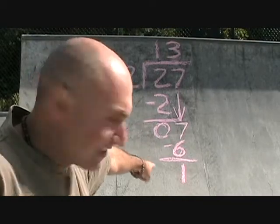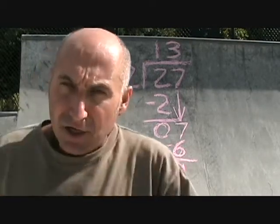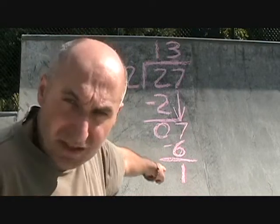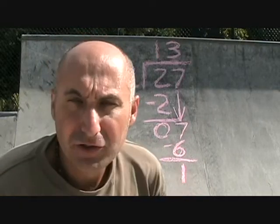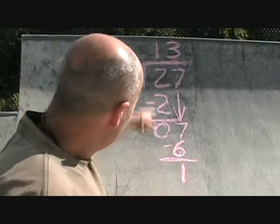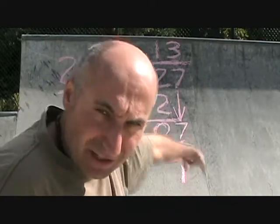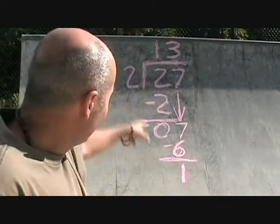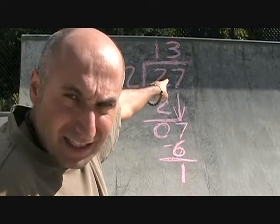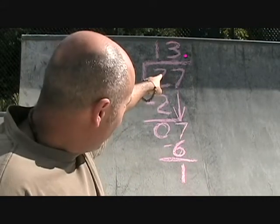So 7 minus 6 is going to be 1. Now, 2 doesn't go into 1. And what you could do if you're looking for decimals, you could put a decimal after the 3 and then start adding 0s and continue from there. And if you did that, you would put a decimal after the 3.